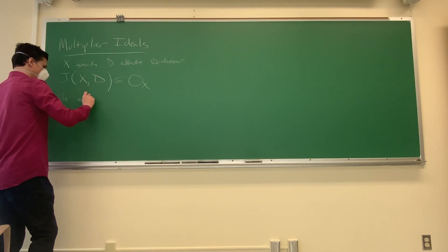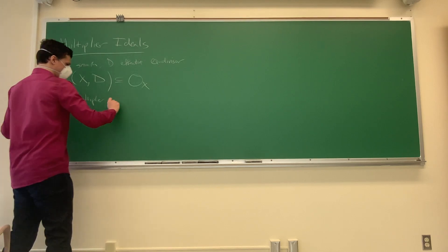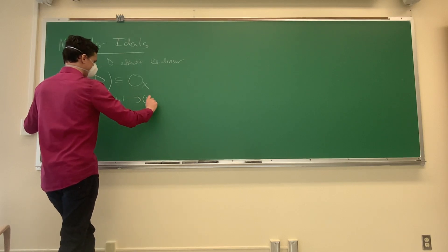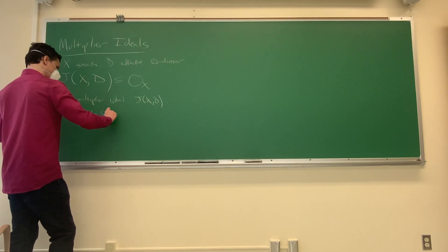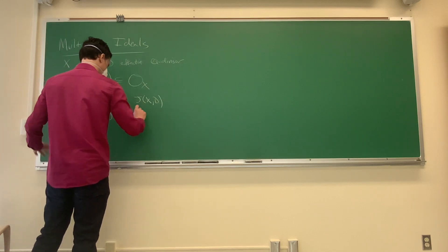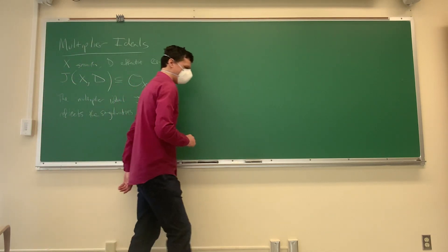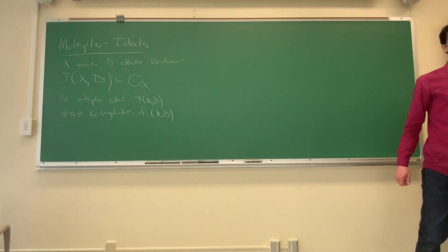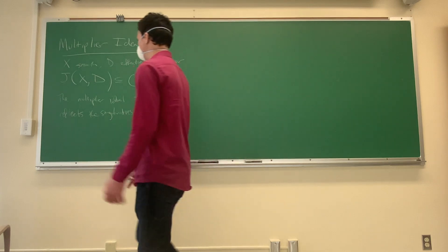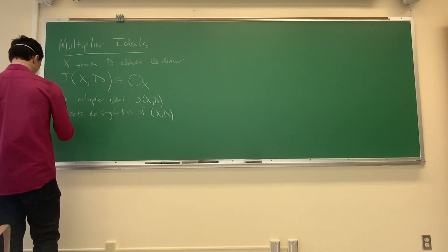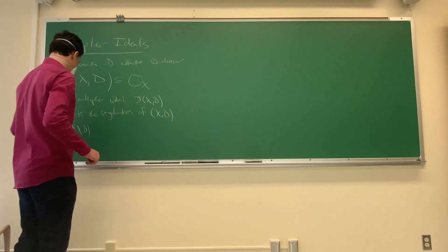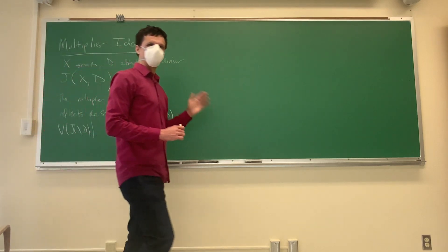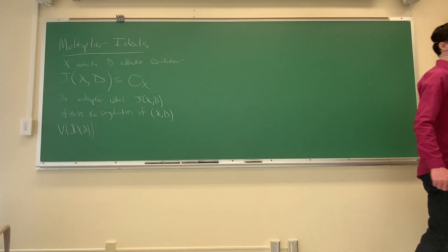The multiplier ideal J(X, D) reflects the singularities of X, D as a pair. A nice property is that you take the vanishing of this multiplier ideal — you look at the quotient of this inclusion of sheaves — and you get the structure sheaf of some subscheme.